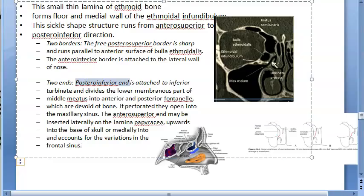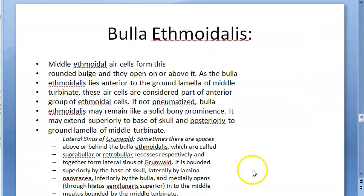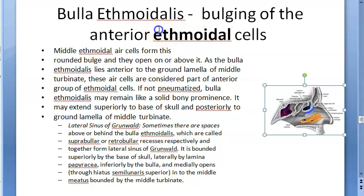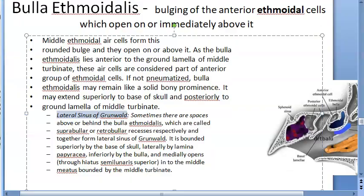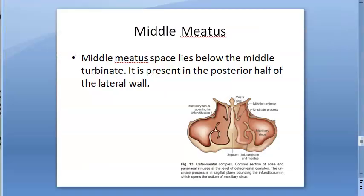Next is the bulla ethmoidalis. This is the bulging of the anterior ethmoidal air cells. The anterior ethmoidal air cells open on or immediately above the bulla ethmoidalis. Here you can see the anterior ethmoid air cells marked above the ethmoidal bulla. So the bulla ethmoidalis is the bulging of the anterior ethmoidal cells, which open on or immediately above it.